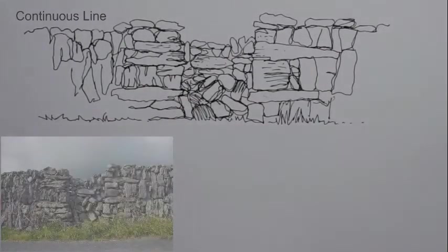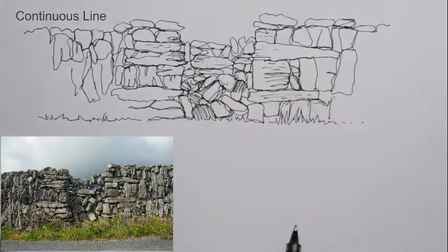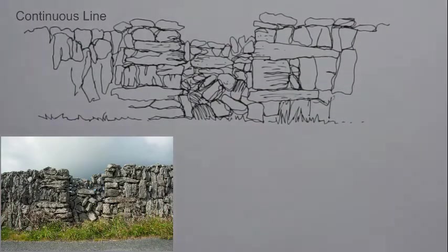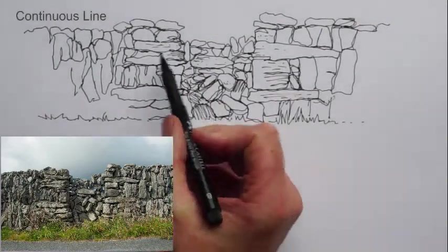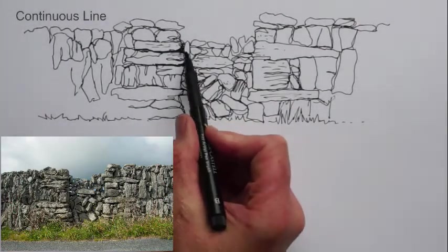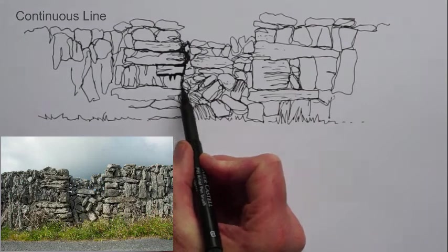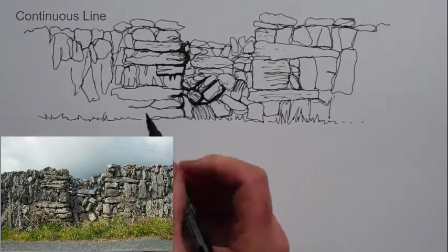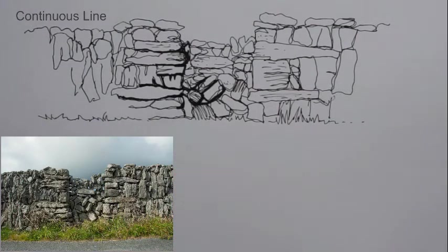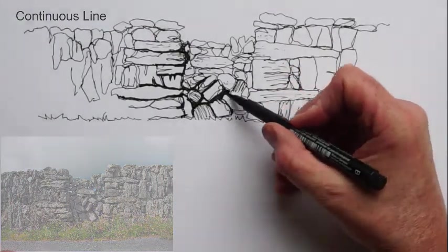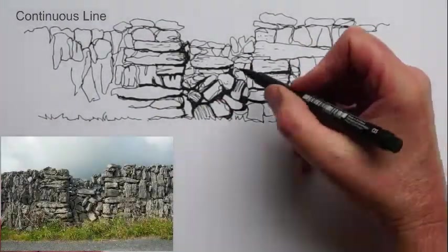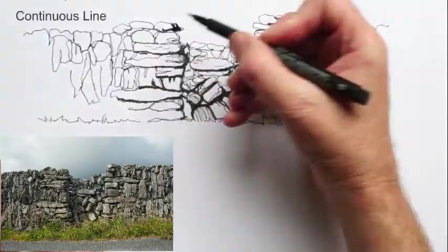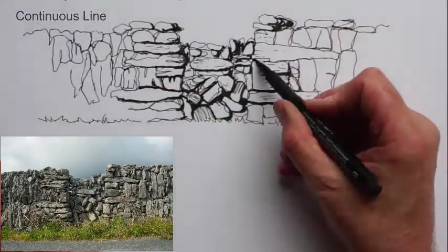And what we're going to do now is use a thicker pen called a brush pen. It's kind of basically a marker, a black marker. And we're going to introduce some really black blacks to kind of ramp up the contrast and to indicate that this area is our focal point. You know, so it's putting in, I suppose, the darkest shadows as well.